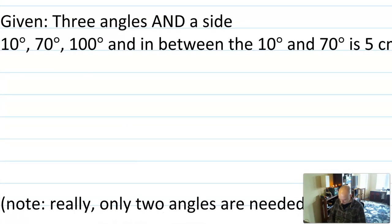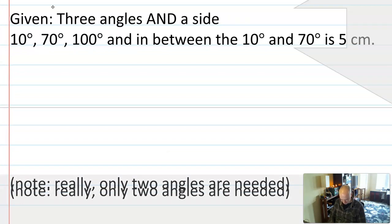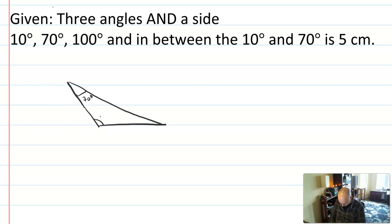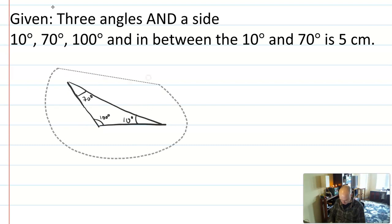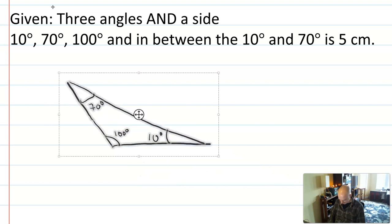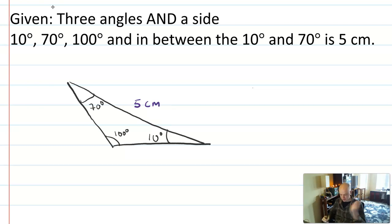We already said three angles alone are not enough because you could have any side length you want. But say I was given three angles — 100°, 70°, and 10° — and also told the side between the 10° and 70° is fixed at five centimeters. Then this counts as a unique triangle, because fixing that side prevents the triangle from being resized.